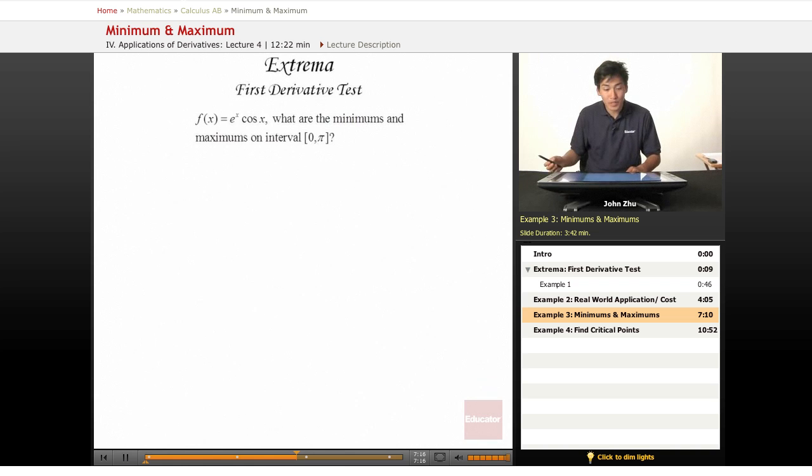We have f of x equals e to the x times cosine of x. To find the minimum and maximum, we know we have to take the derivative.